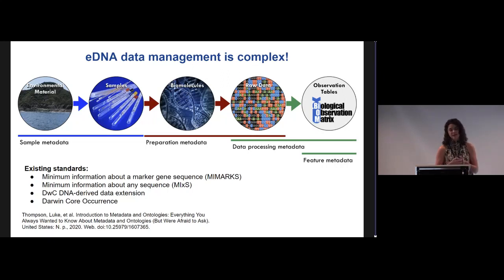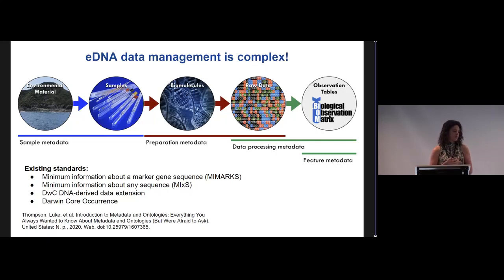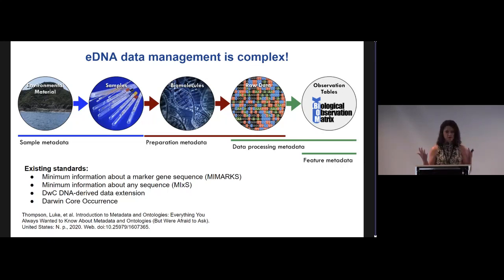There have been mentions today about some existing standards that help with recording all of this kind of data and metadata. One commonly used community standard is the Minimum Information about a Marker Gene Sequence, or MIMARKS. Also Minimum Information about Any Sequence, MIxS. And Darwin Core has the DNA-derived data extension, which pulls from these other terms. You can also use Darwin Core occurrence to talk about the actual sample and occurrence context itself.